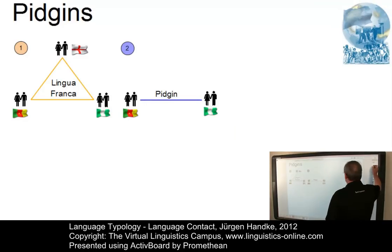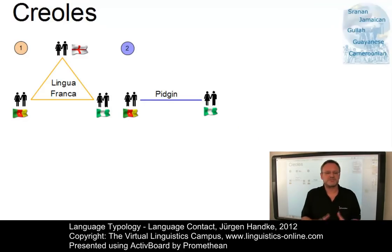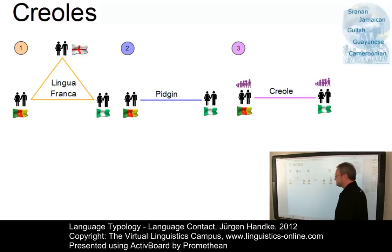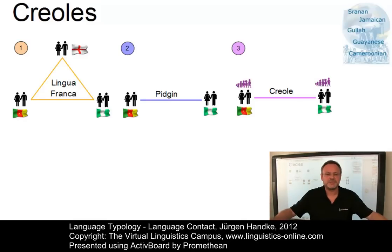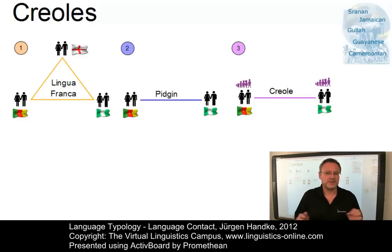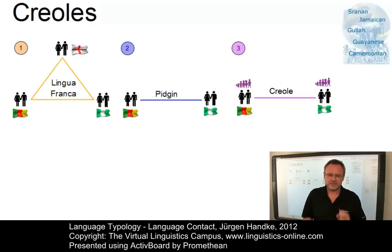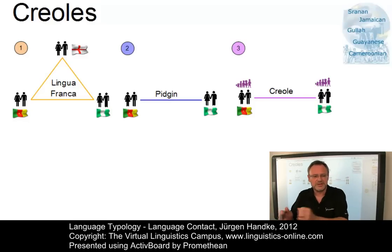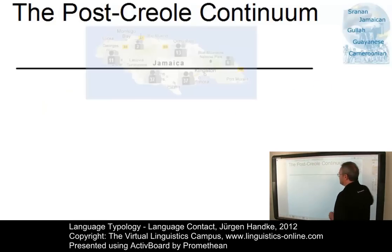When what originated as a pidgin becomes the native language of a group of people, a creole has developed. This typically occurs when the speakers of a pidgin have children. Their children grow up with the pidgin as their first language, which is now referred to as creole. As soon as this situation stabilizes, the pidgin — now the creole — increases in complexity, eventually becoming a full-fledged language in its own right. Depending on the contact with its source language, the creole and the source may become mutually unintelligible. The continuum between the source language and the creole is referred to as the post-creole continuum.